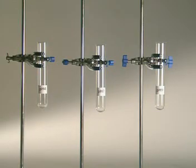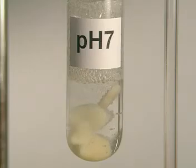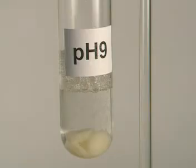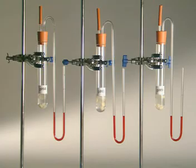The same number of potato discs are placed in test tubes containing hydrogen peroxide solutions at pH 4, 7, and 9. A simple manometer is attached to each tube.